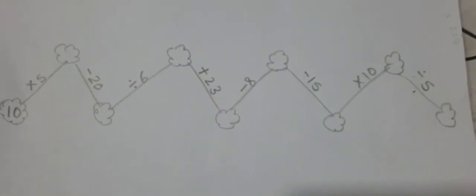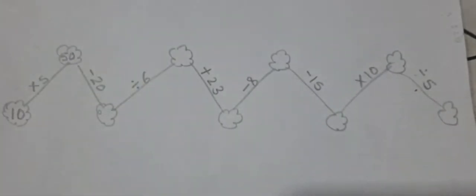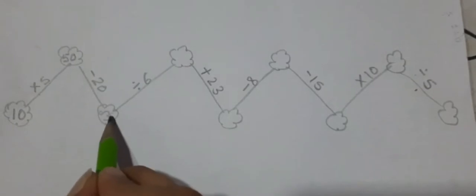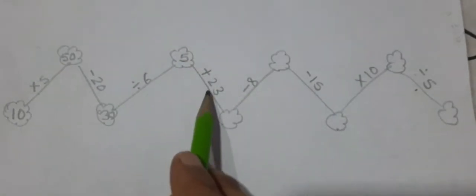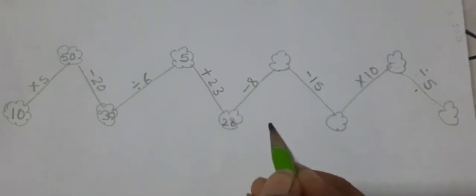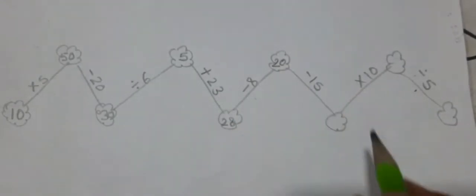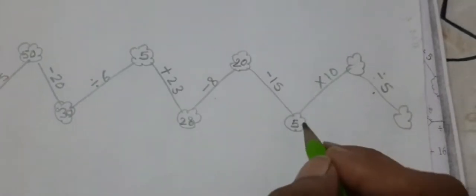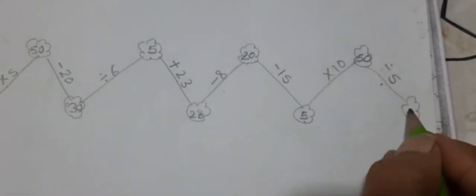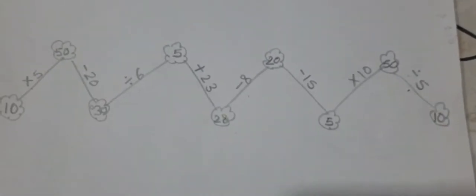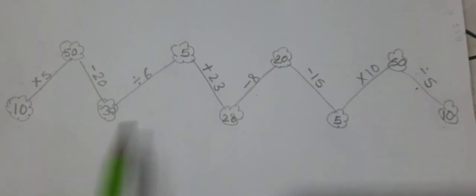As per the directions given: 10 multiplied by 5 is 50. 50 minus 20 is 30. 30 divided by 6 is 5. 5 plus 23 is 28. 28 minus 8 is 20. 20 minus 15 is 5. 5 multiplied by 10 is 50. 50 divided by 5 is 10. After conducting all the calculations, I got the same number I started with, so this is correct.